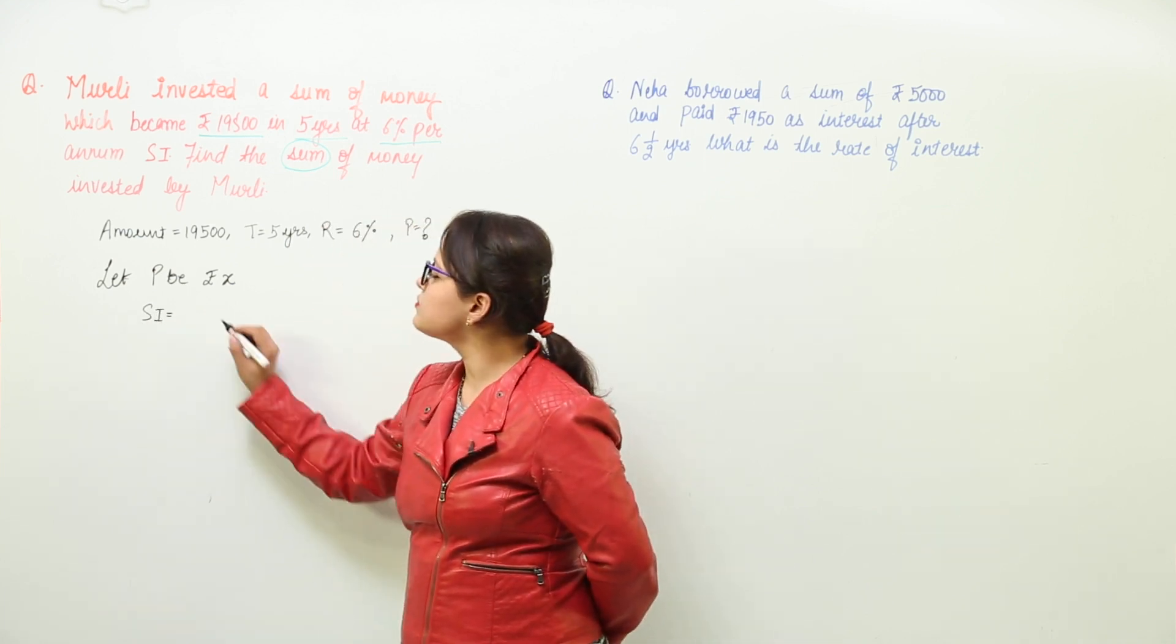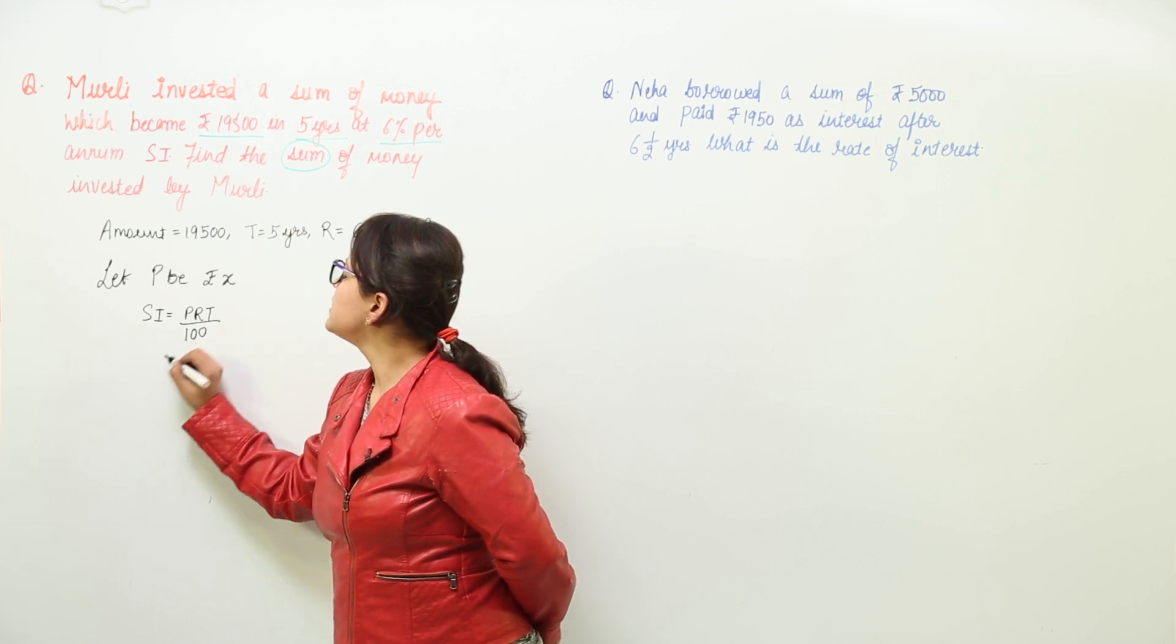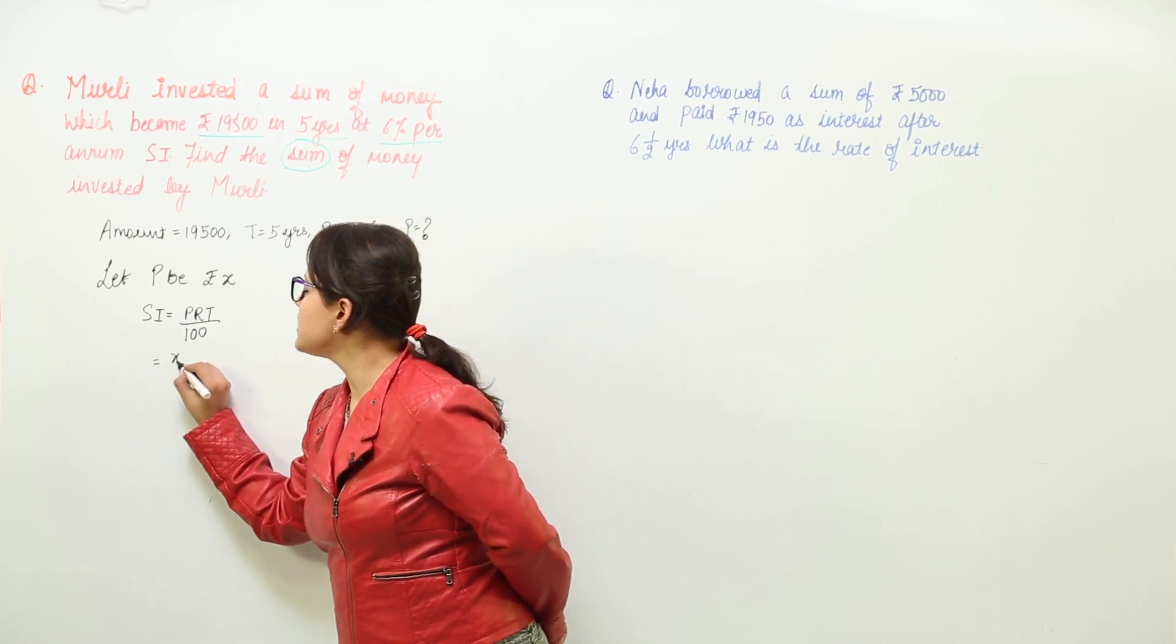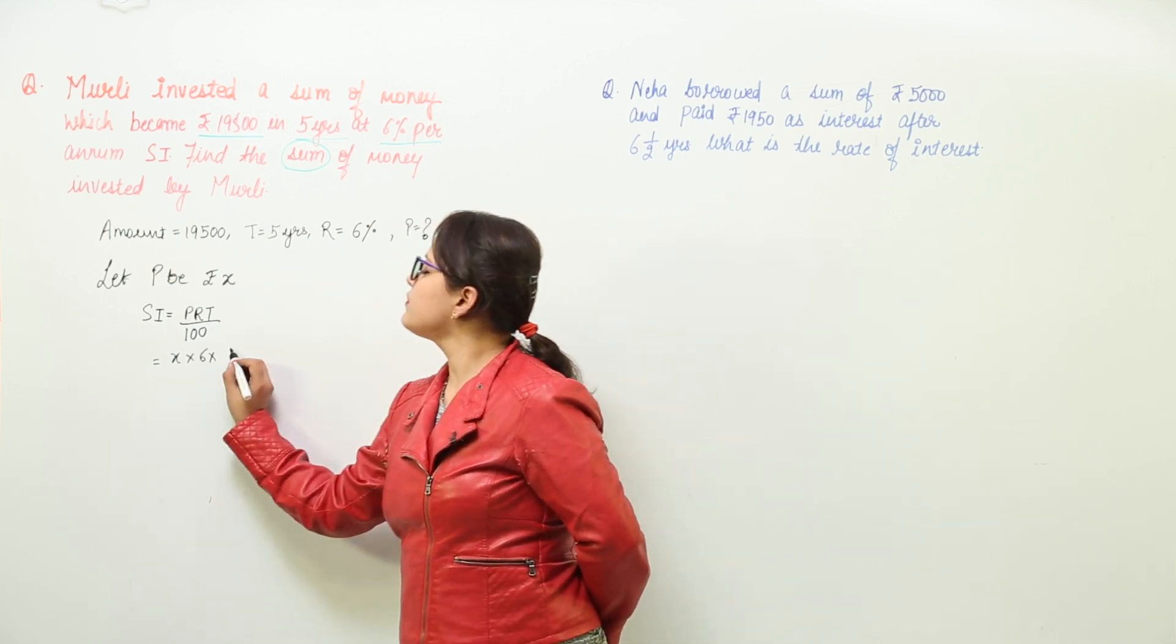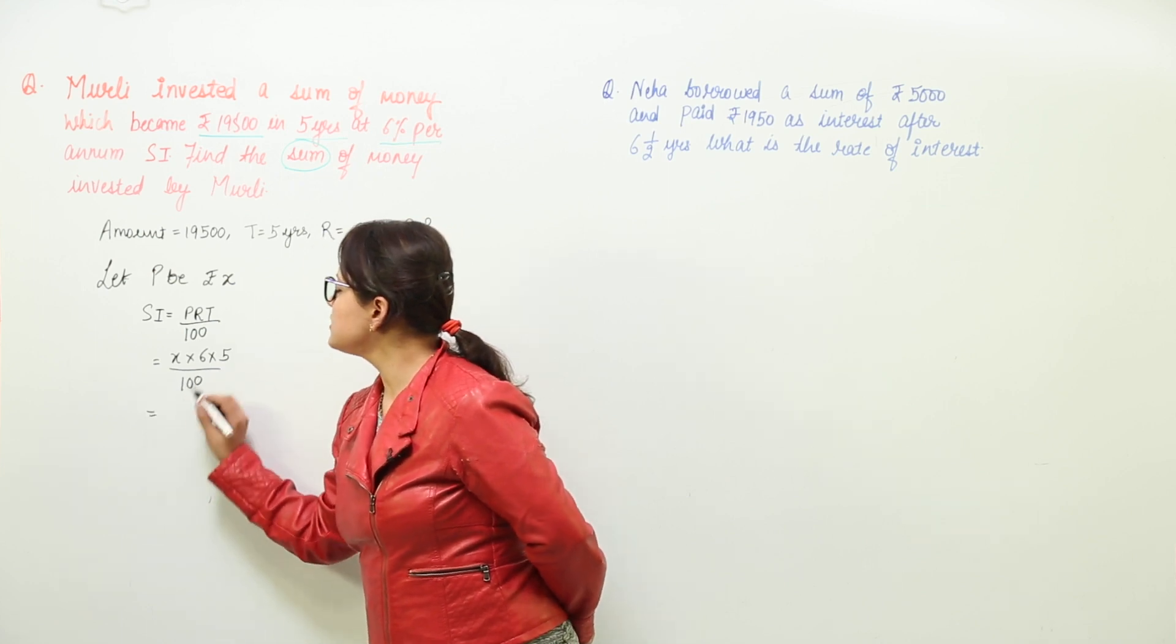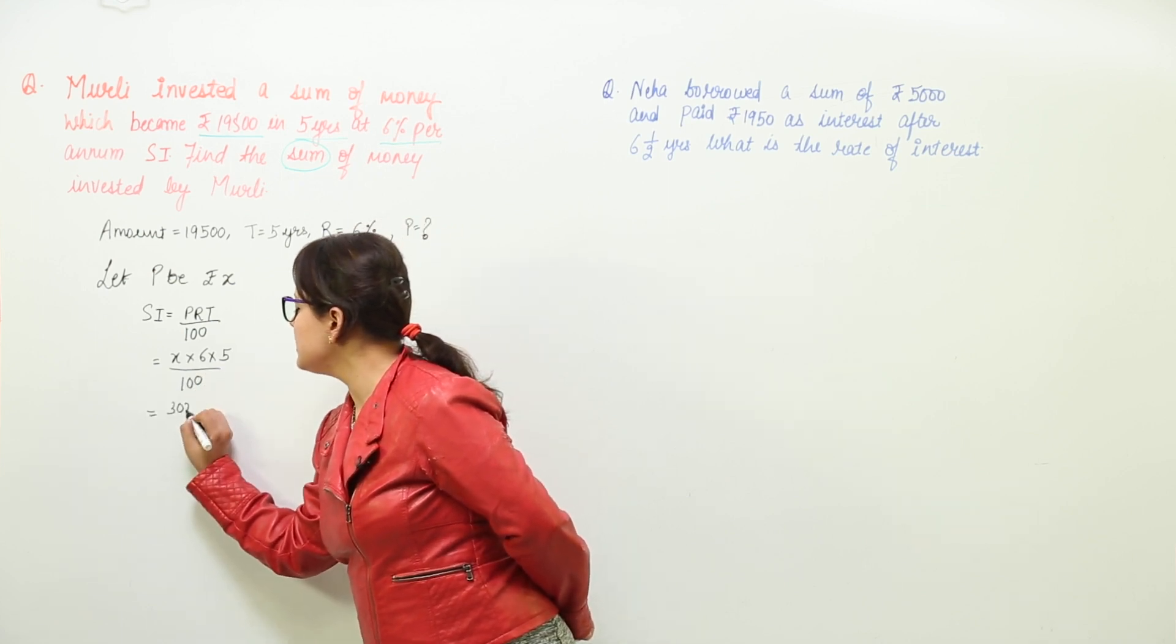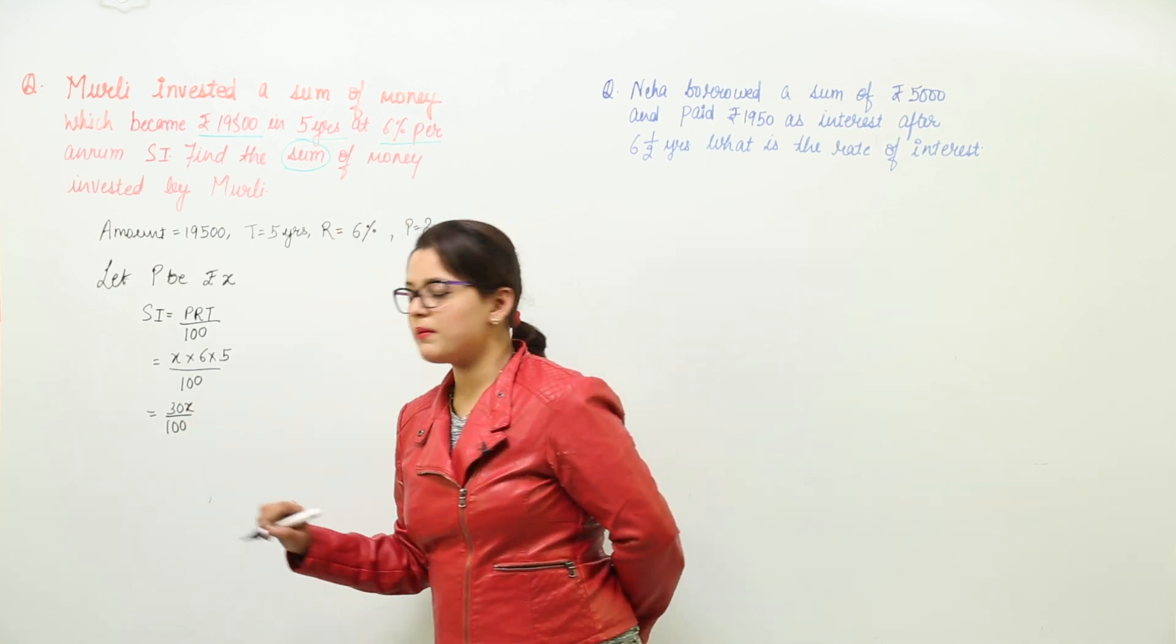My simple interest would be PRT upon 100. This is equal to P is x. Rate of interest charged was 6%. The time is 5 years whole upon 100. So I get this as 6 times 5 as 30x upon 100. I do have some common factors in them.